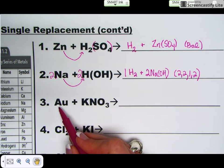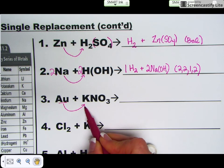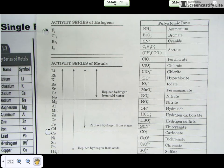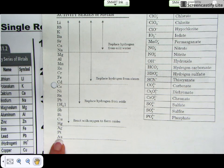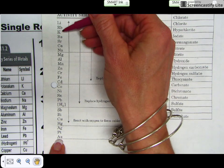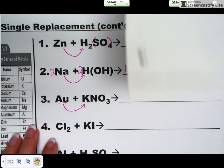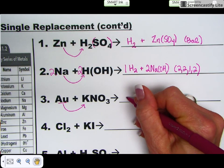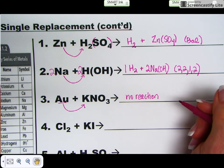On number 3, you have gold. Gold is going to try to kick out potassium. Check your activity series. Notice gold is at the very bottom of the activity series. Potassium is up near the top. So in this case, gold cannot replace potassium. So in that instance, you would say no reaction. Nothing will occur.